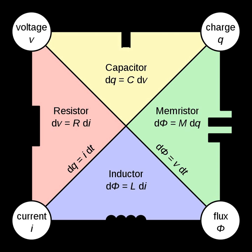Only nine types of element — five passive and four active — are required to model any electrical component or circuit. Each element is defined by a relation between the state variables of the network: current, voltage, charge, and flux.